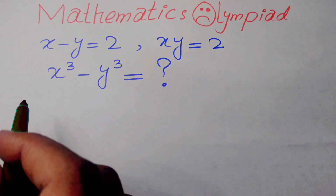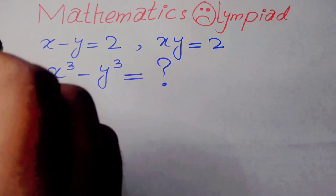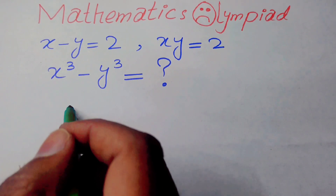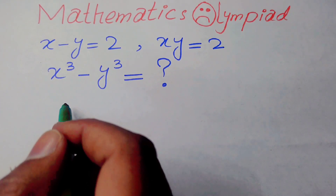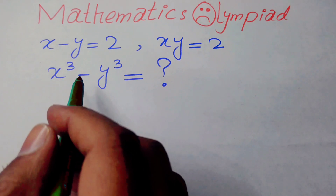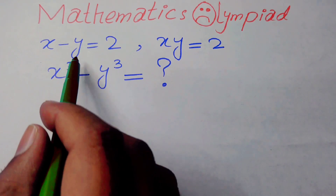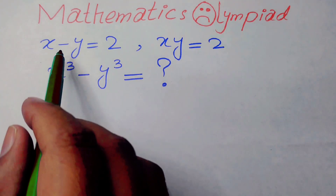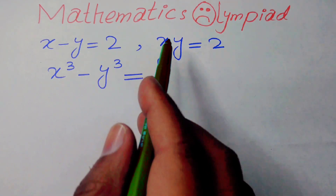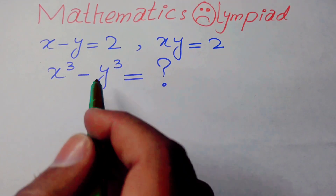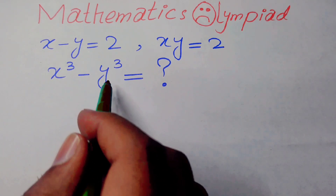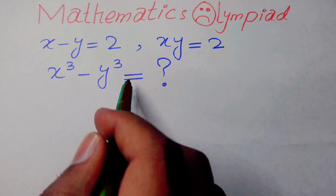Hello everyone, welcome back to the Map of Mathematics. In this video we are going to solve a nice system of equations. We have two equations: x minus y is equal to 2, and x times y is equal to 2. We will find x cubed minus y cubed.